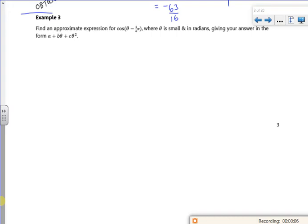Right, so here we go. It says find an approximate expression for cos(θ - π/6) where θ is small and in radians.